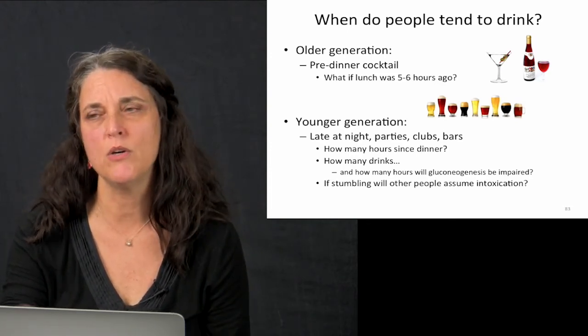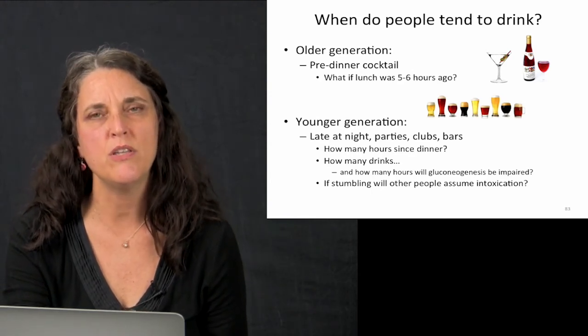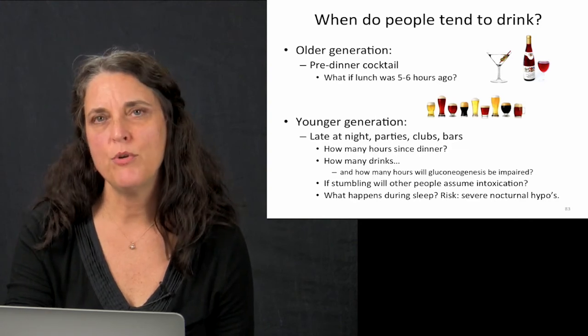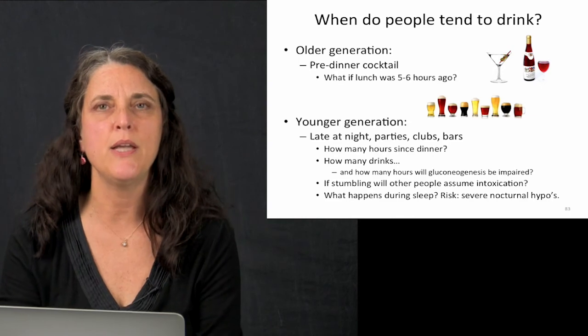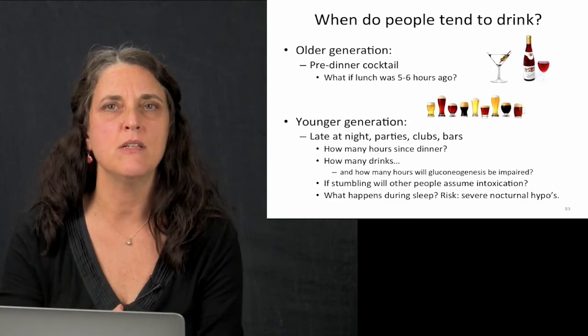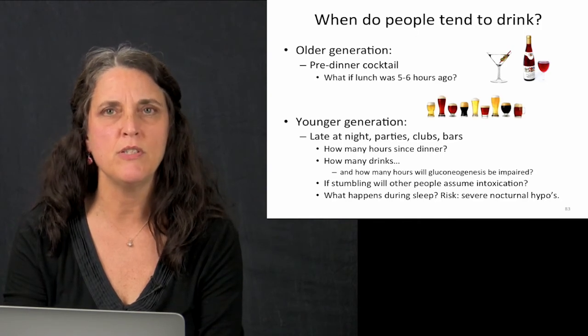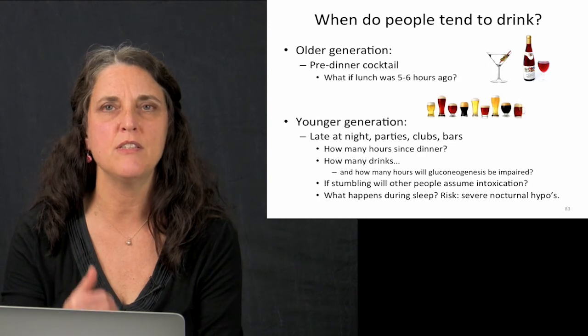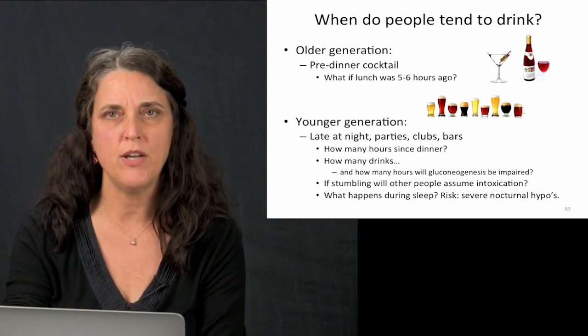What if you're stumbling because you are low and somebody just saw you with a cocktail? Are they going to come to your assistance or do they think you're intoxicated? What happens during sleep when you've had three or four beers earlier in the evening and now it's 3 a.m. and the alcohol is still in your liver impairing gluconeogenesis? Do you feel your lows when you're asleep? Not necessarily. So there is a risk of significant severe lows and even you can die from low blood sugar after heavy drinking.